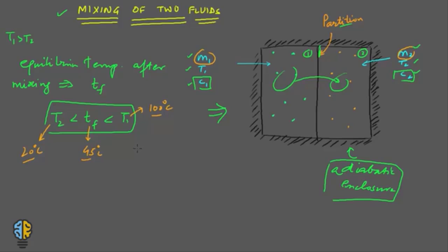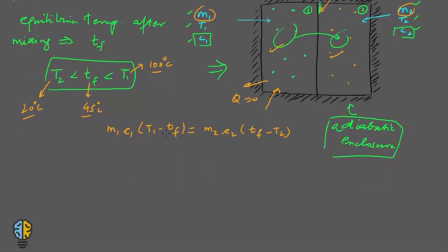Since the energy interaction is exclusively confined to the two fluids with no heat coming in or out — the system is isolated — whatever heat is lost by fluid one is the same amount gained by fluid two. So: m1·c1·(t1 − Tf) = m2·c2·(Tf − t2). From this equation we can find the value of Tf.